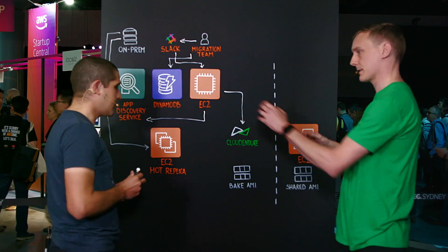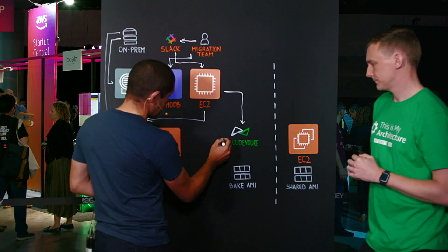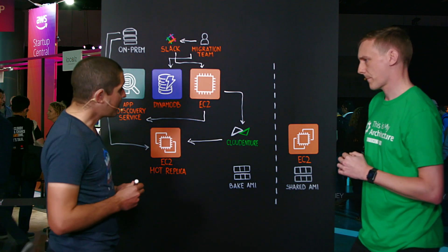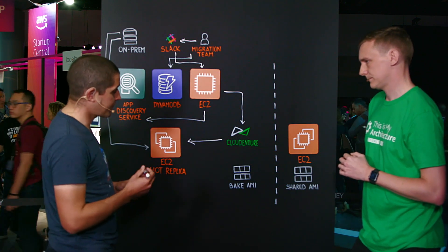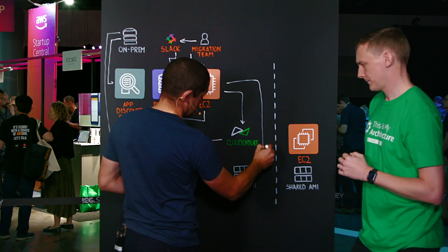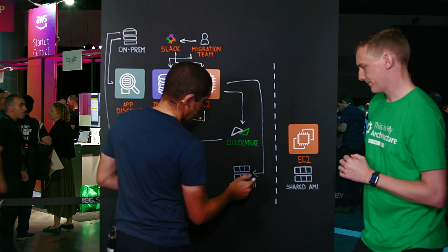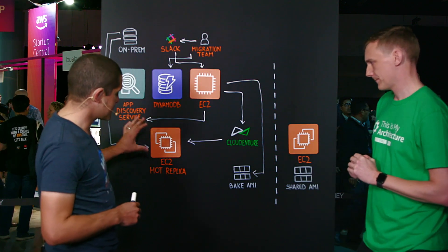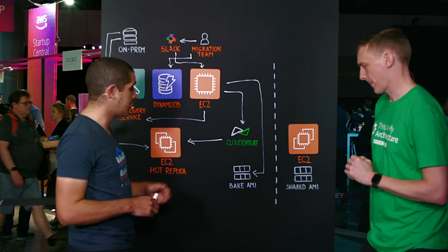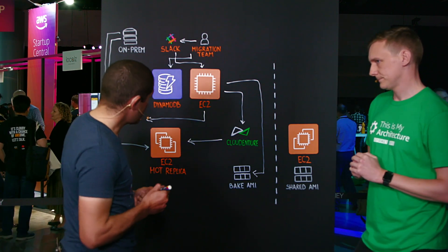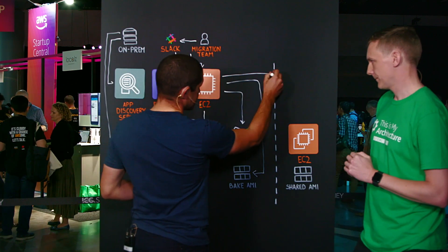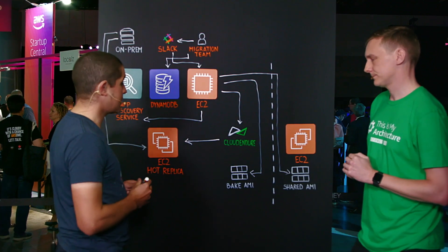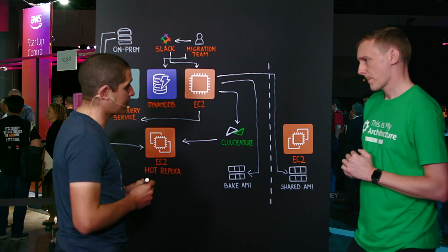These are all API calls. CloudEndure will then effectively stop the replication. From there, the migration factory will bake the AMI — that's another API call. So we've got the hot replicated instance, making sure that the data that was on-premises is now living in an AMI. From there, we effectively share that AMI across to the target account, using the metadata that lives in DynamoDB so we know exactly which target account it needs to live in. It's shared through encryption as well.